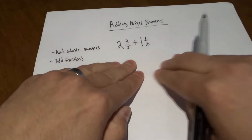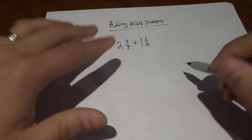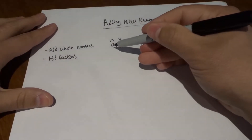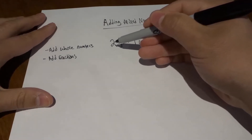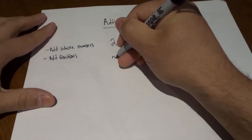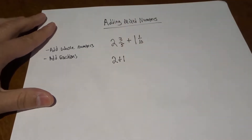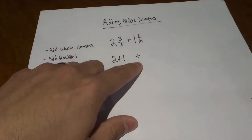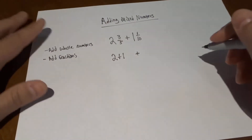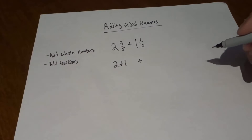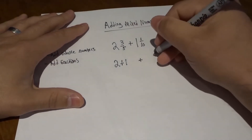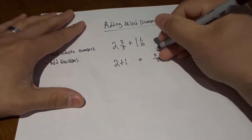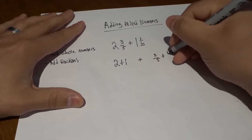I'm going to keep this sort of separate so that it's easy to understand. We're going to start off by adding the whole numbers together, which is two and one. So we're going to do two plus one, and then we're also going to add the fractions. The fractions we have here are three-fifths and one-tenth, so we're going to add those together.